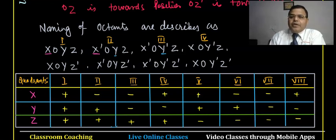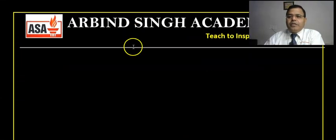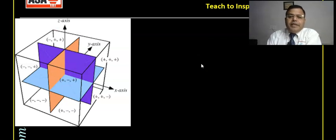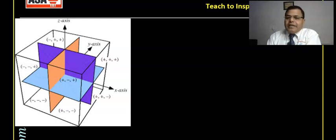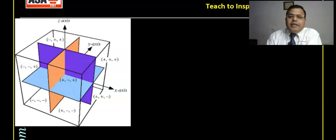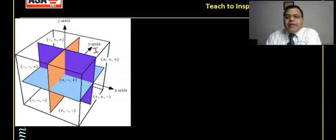Now I will tell you how these eight octants look in a three-dimensional figure, since on a plain figure it is not fully possible to show this. You can visualize this: there is a plane for the x-axis, a plane for the y-axis, and a plane for the z-axis. In the first octant, x-axis, y-axis, and z-axis are all positive, so all three are positive in the first octant.